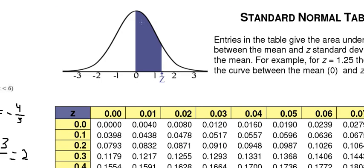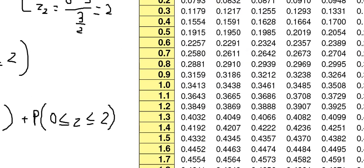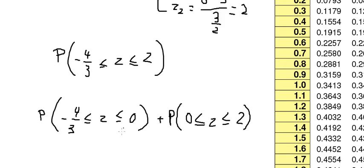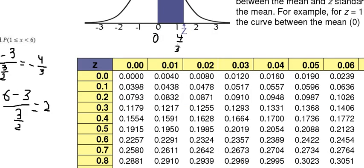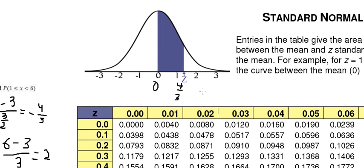If we look carefully, this table just concentrates on the positive area. We can calculate the positive area, but we just need to put negative side. Now from negative 4 over 3 to number 0 is just like from 0 to positive 4 over 3. We need to find the value 1.33.